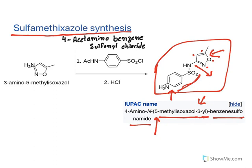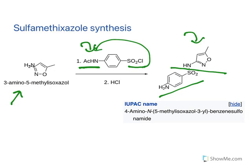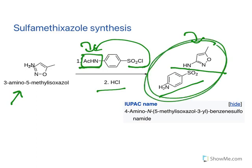The sulfonyl group links to the benzene sulfonamide portion. For synthesis, two parts are combined: 3-amino-5-methyl isoxazole and benzene sulfanilamide. The amine group is first acetylated as a protecting group to prevent the sulfonyl chloride from reacting with it. This protecting group is later removed, resulting in the formation of condensed sulfamethoxazole.